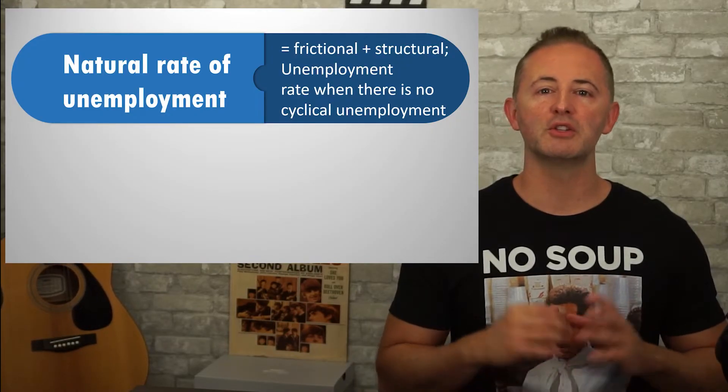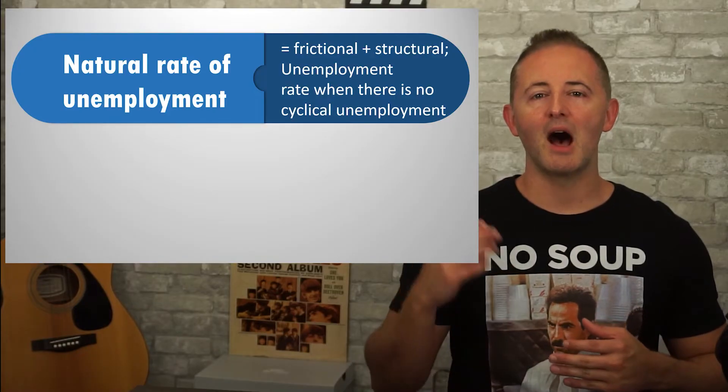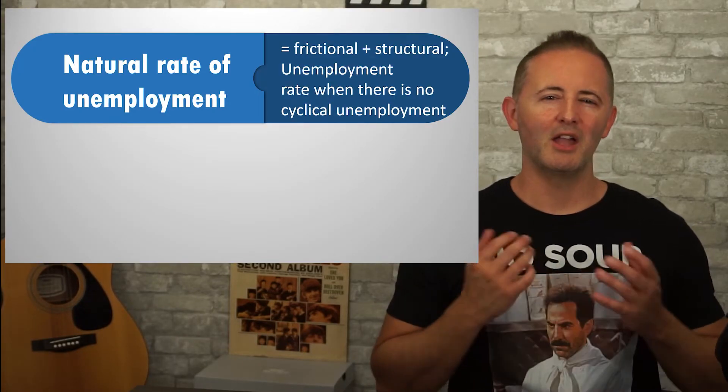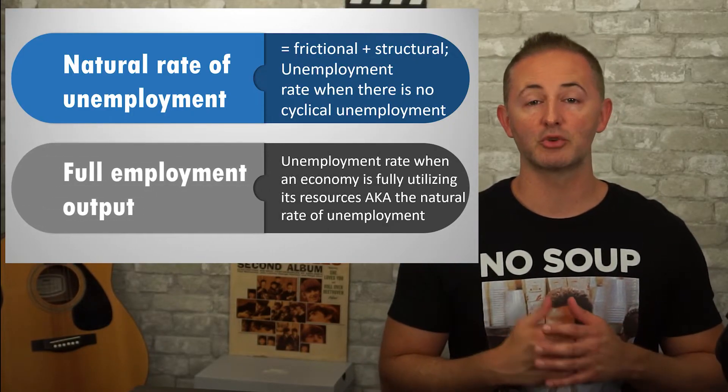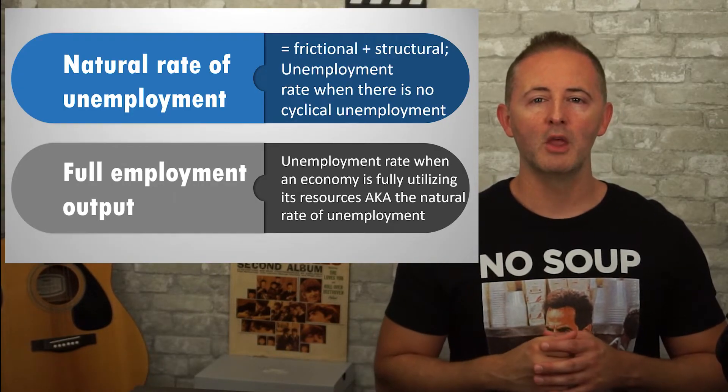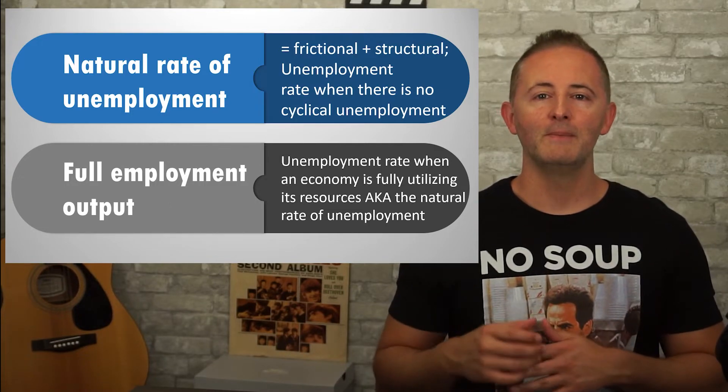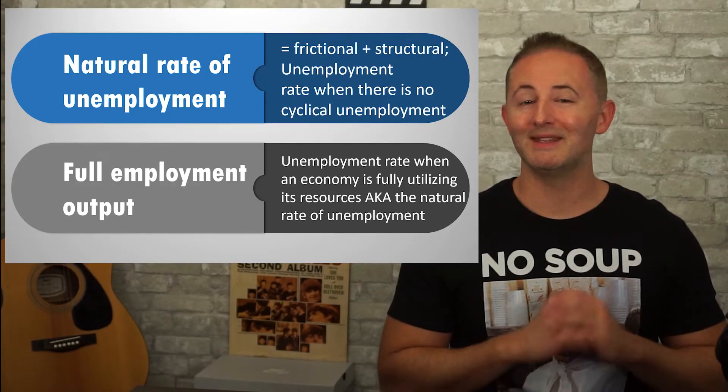Structural is the messy one — on one hand it's a sign of technological progress and probably means lower costs to consumers, but for the person who lost his job and may not have the skills employers are looking for, it can be very painful. There's a measurement known as the natural rate of unemployment, which is the unemployment rate an economy has when there is no cyclical unemployment — unaffected by recessions or changes in the business cycle. Another way to say this is that it's the unemployment rate when an economy is fully utilizing its resources, known as full employment output. The natural rate of unemployment equals frictional plus structural unemployment, and it doesn't change due to the business cycle, but it can gradually change over time due to underlying societal, political, and economic conditions.